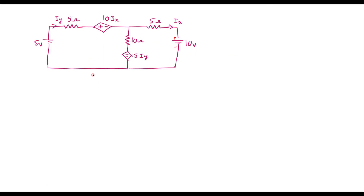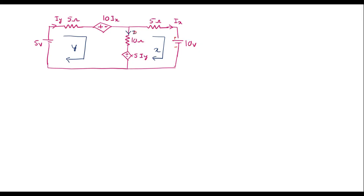Here we can observe that this circuit consists of two dependent sources — both are current-dependent voltage sources. This one is dependent on the current ix, where ix is flowing in this branch, and this voltage source is dependent on current iy, where iy is flowing here. Let me consider this loop current as y and this loop current as x. Now let's find the current through the 10 ohm resistor; let that current be i.